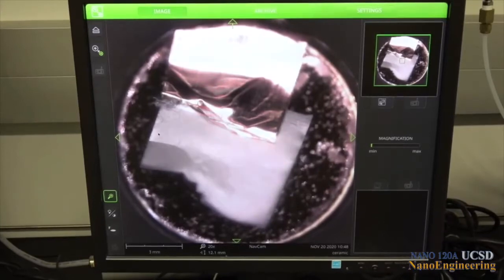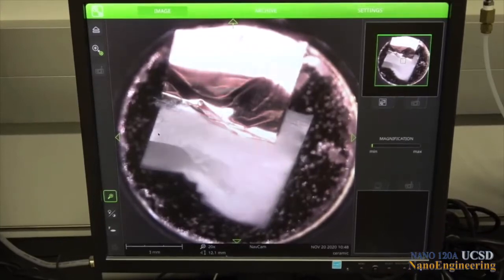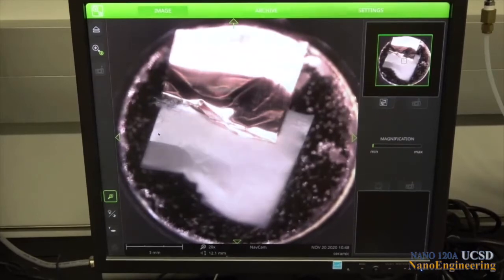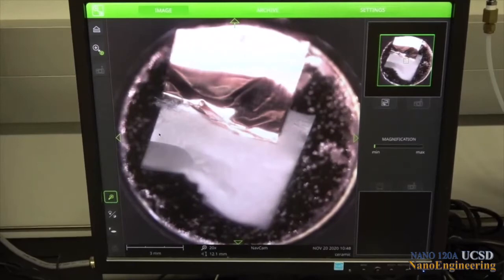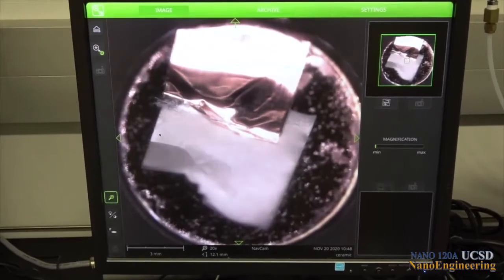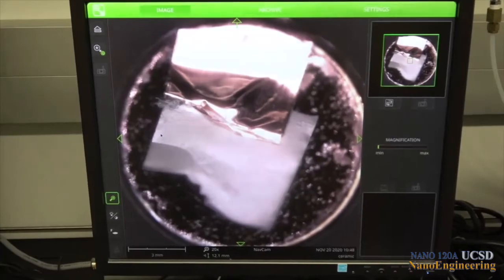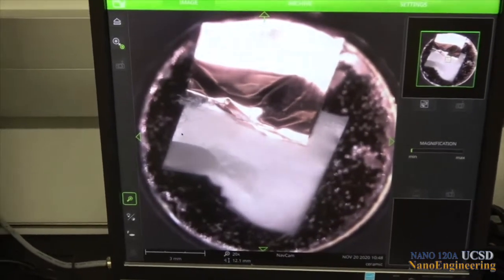When the specimen is first placed into the microscope, it is first viewed by an optical navigation camera capable of producing color images up to 135x magnification. This is useful for identifying locations on your sample or perhaps even identifying samples of interest if multiple specimens are present on the aluminum mount.